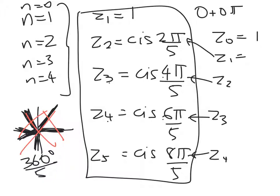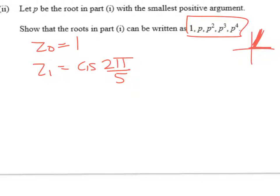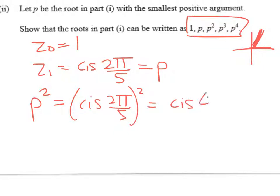We're going to use those results in the last little bit now. Let P be the root in part 1, with the smallest positive argument. So, we've got our five roots. So, our first one, our z0, was 1. So, that didn't have a positive argument. That had an argument of 0. So, what we'll ask for here is the next one up, which is z1 is equal to cis(2π/5). So, now we're asked to show that the roots in part 1 can be written as those things there. We're asked to call that first root P. So, now, let's take a look at what happens if I do P². So, P² is equal to cis(2π/5)², which is equal to cis(4π/5), by De Moivre's theorem.